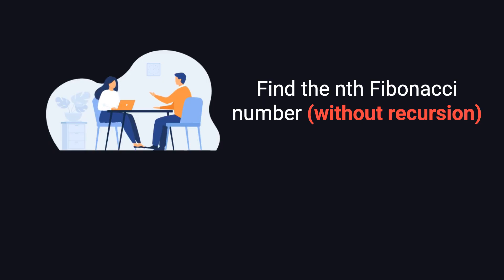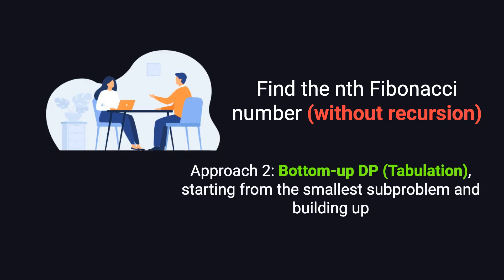But in interviews, many interviewers will ask you to write a solution without using recursion. That brings us to the bottom-up approach, also known as tabulation. The idea is simple. Instead of working backward from fn, we start from the smallest cases and build our way up. We already know that f0 is 0 and f1 is 1. From there, we compute f2, then f3, then f4, and so on, each value based on the two previous ones.